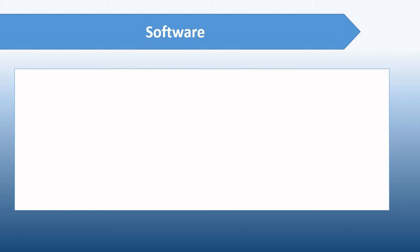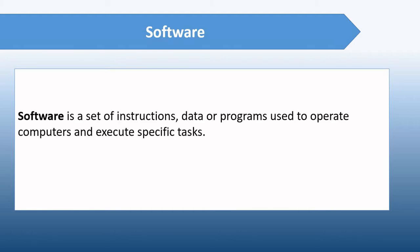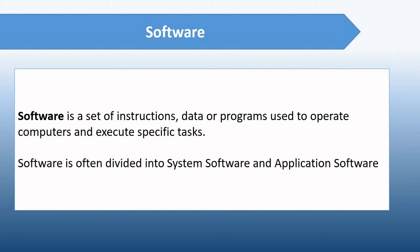Another component of ICT is software. Software is a set of instructions, data, and programs used to operate computers and execute specific tasks. Software is often divided into two: system software and application software. The system software helps run the computer hardware and the computer system itself. It includes operating systems, device drivers, and diagnostic tools. System software is almost always pre-installed on your computer — the moment you turn on your computer, the system software is already running. Examples of system software are Microsoft Windows and Linux.